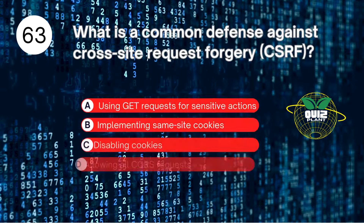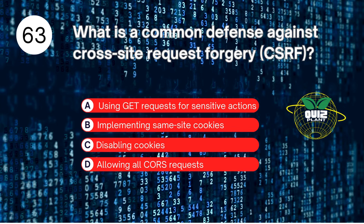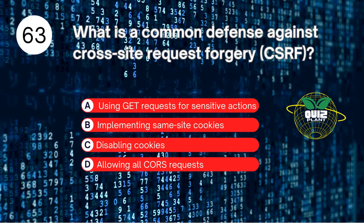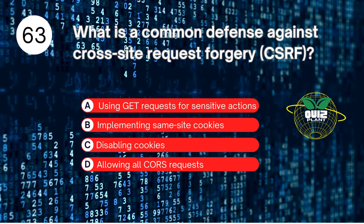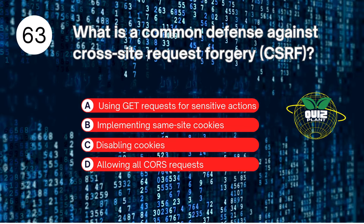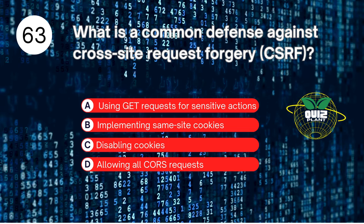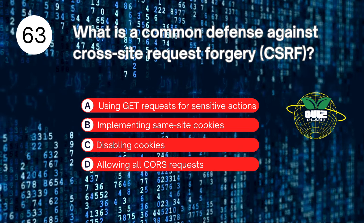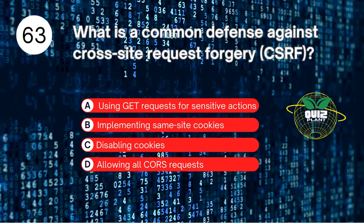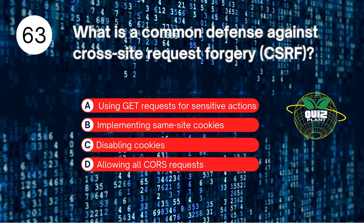Number 63. What is a common defense against cross-site request forgery, CSRF? A. Using GET requests for sensitive actions. B. Implementing same-site cookies. C. Disabling cookies. D. Allowing all CORS requests. The answer is B. Implementing same-site cookies.